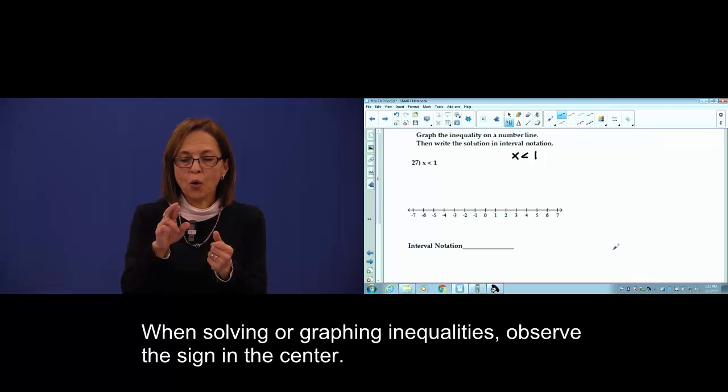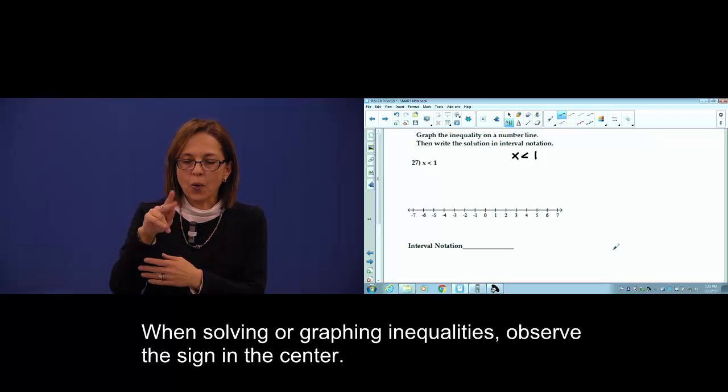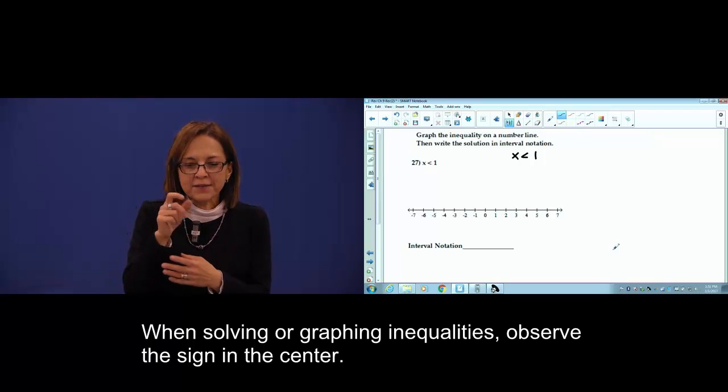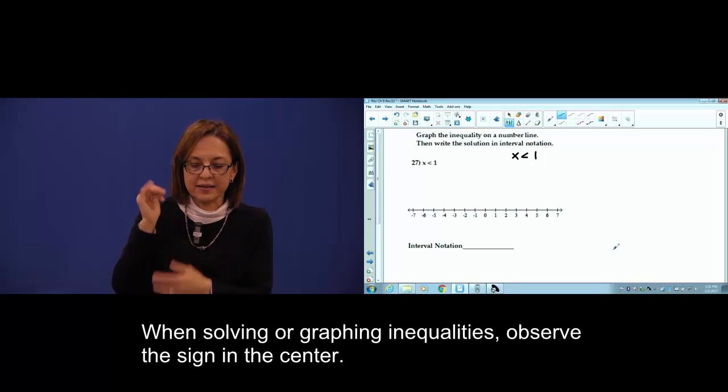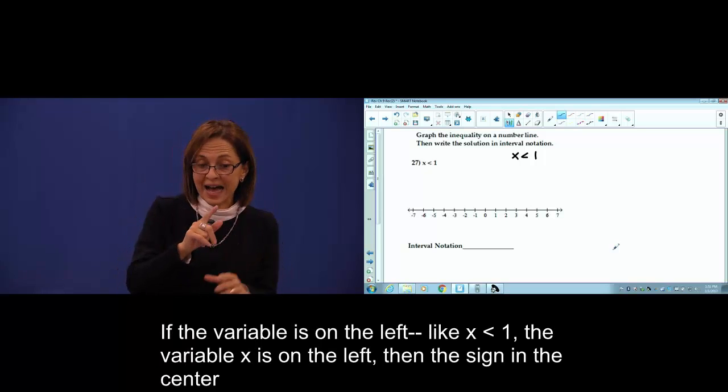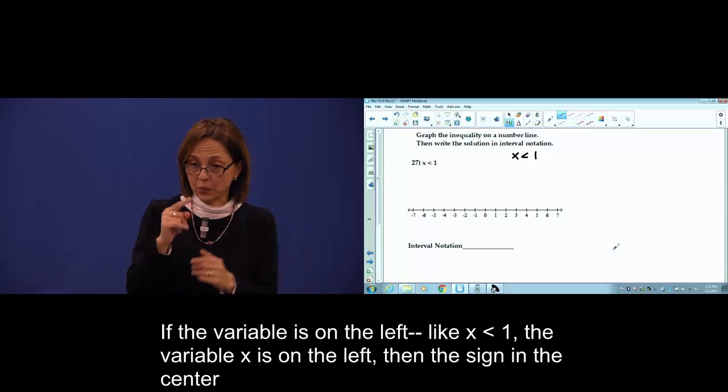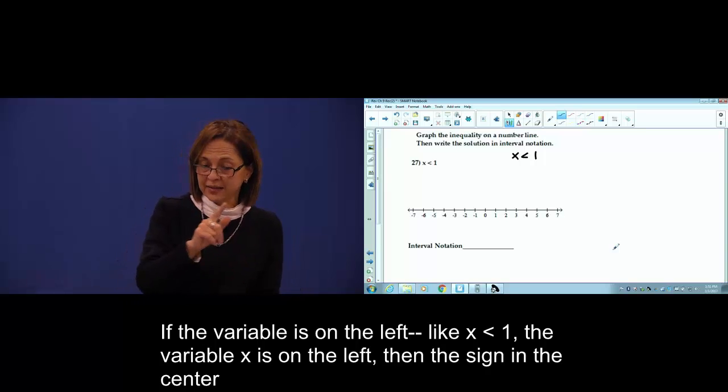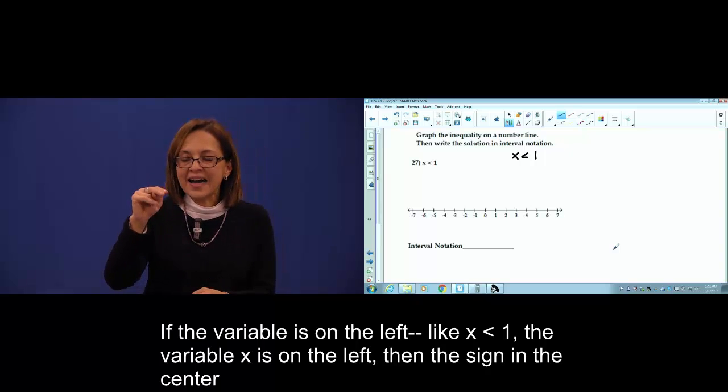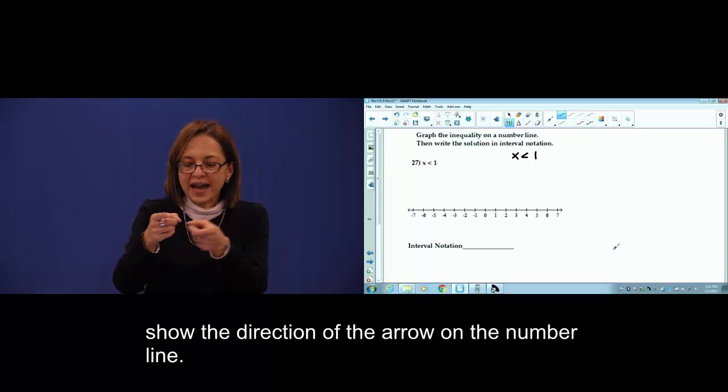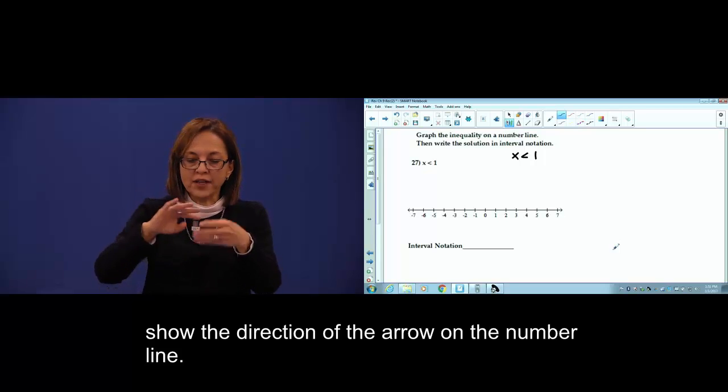When solving or graphing inequalities, observe the sign in the center. If the variable is at the left, like x less than 1, variable x is at the left, then the sign in the center shows direction of the arrow on the number line.